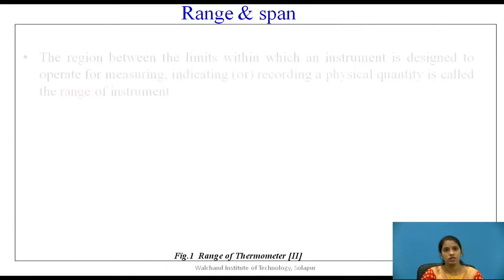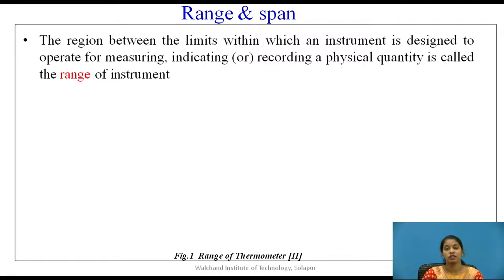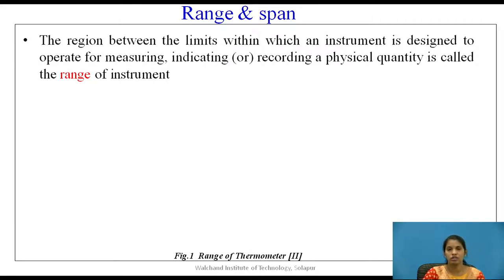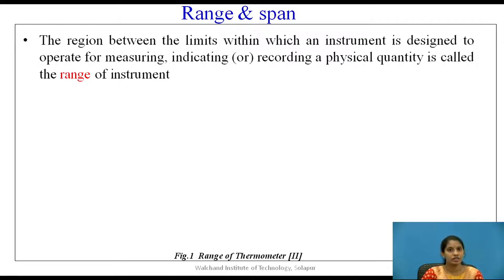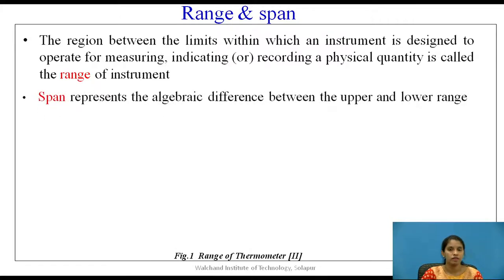Range is the region between the limits within which an instrument is designed to operate — to measure, indicate, or record a physical quantity. If you take an instrument to measure some quantity, it will have an upper and lower limit. The region between the upper and lower limit is known as the range of that particular instrument.